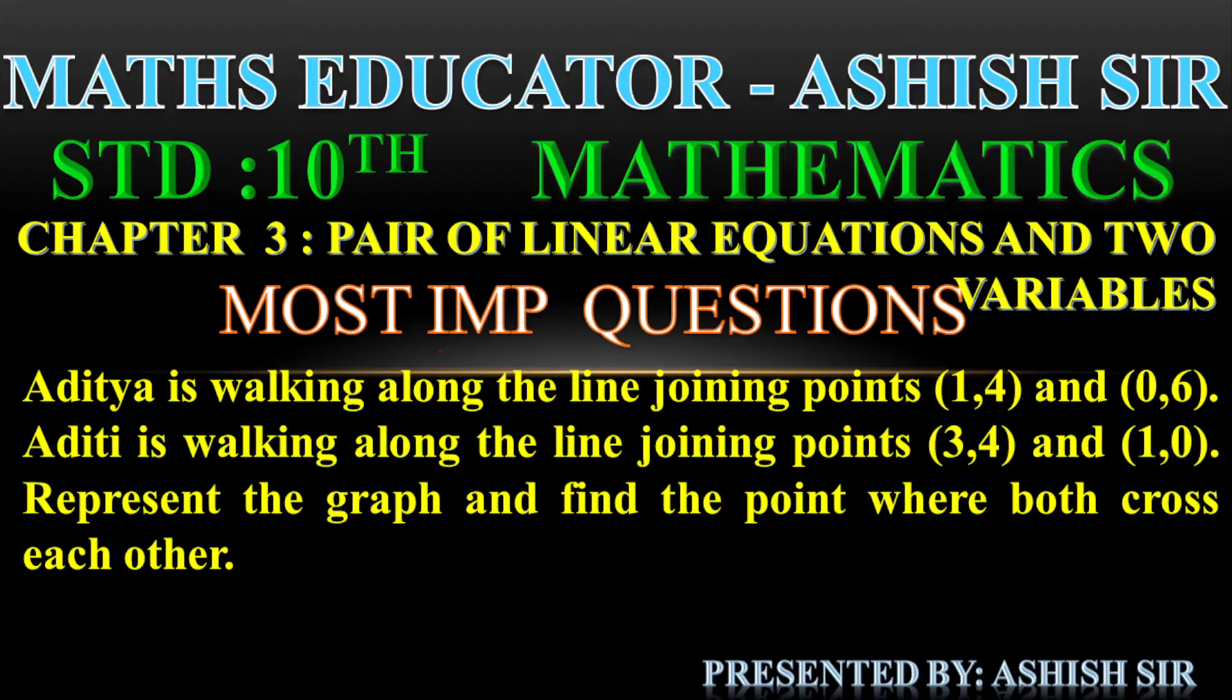Here's the question: Aditya is walking along the line joining points (1,4) and (0,6). Aditi is walking along the line joining points (3,4) and (1,0). Represent the graph and find the point where both cross each other.